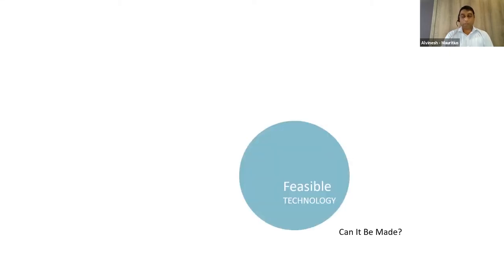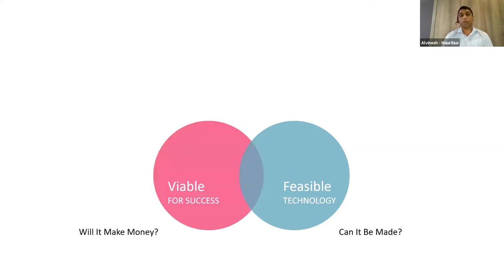Let's dig further into design thinking and look at its key elements and structure. This model is from IDEO. Whenever you have a problem or an idea you want to develop, there are two things you would normally do: you would check if the idea is feasible — not only technologically but also in terms of resources — and you would ask whether it will make money, whether it is viable. But those two items are not really guarantees that your project or idea would be successful.